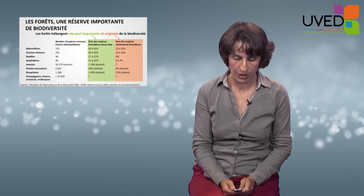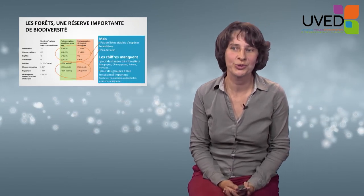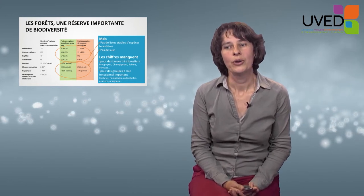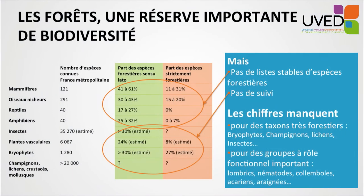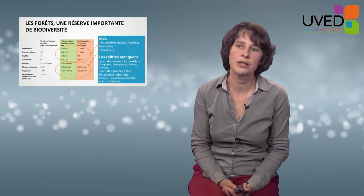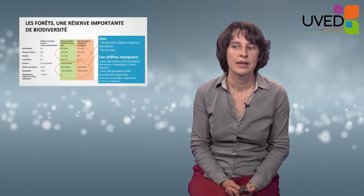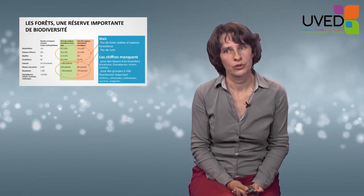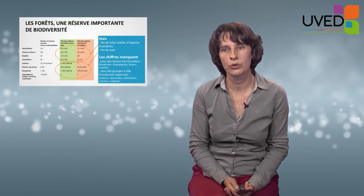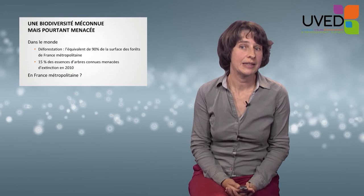Forests make an original contribution to biodiversity. However, this table also shows that we unfortunately lack data and figures. We don't have a stable list of forest species and non-forest species, which is why the table only provides assessment ranges and not precise figures. We also don't have sufficient monitoring and no general observatory of forest biodiversity in France. At best, we have estimates for some groups; at worst, we don't have any data at all — especially for groups such as bryophytes, mushrooms, lichens, insects, and all the species that live on the ground.